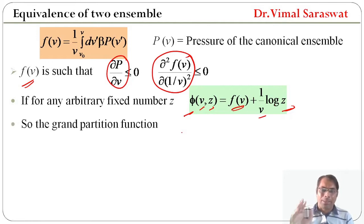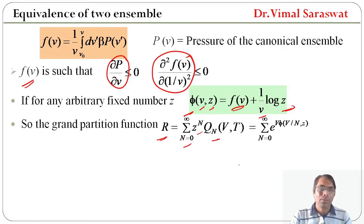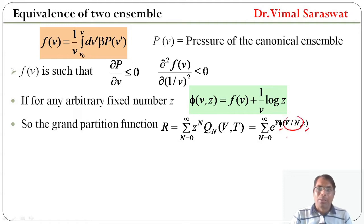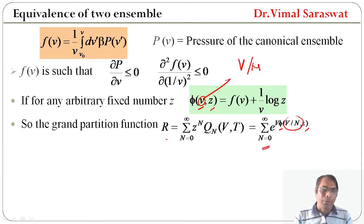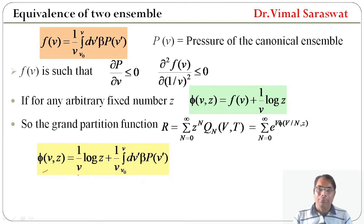So, the grand partition function is r equal to sigma, n equal to 0 to infinity, z raised to n, Q(n,V,T). This equals sigma, n equal to 0 to infinity, exponential of V times phi, where phi is the function of V/N and z, because phi is the function of small v and z, and small v is V/N. So, r equals sigma, n equal to 0 to infinity, exponential of V times phi(V/N, z). And therefore, phi equals 1 over V times log z plus 1 over V times the integral from v₀ to v of dv' beta p(v').